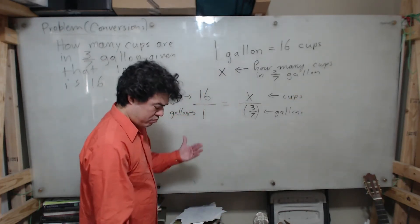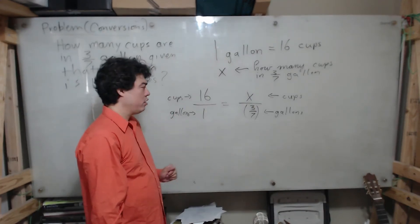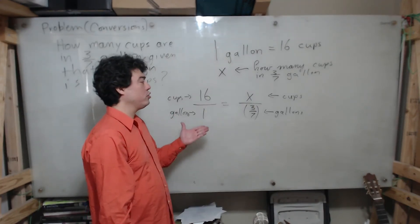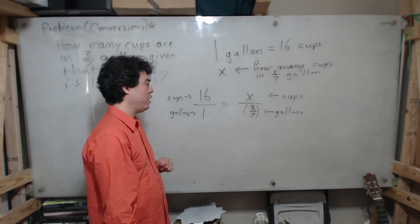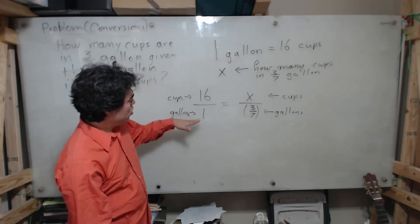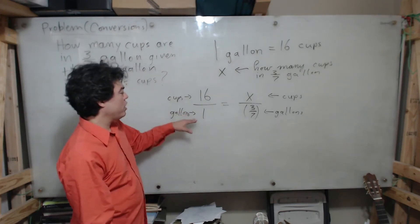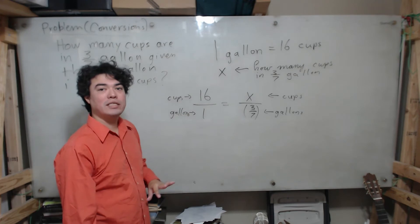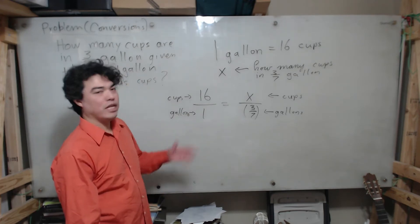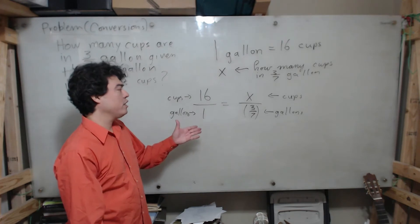Okay, so now I have set up my proportion that we're going to solve to get the number of cups in three-sevenths of a gallon. And think about why this proportion makes sense: we assume that units don't change size, so if one gallon has 16 cups, that's going to be the same no matter what. That's basically why this conversion technique works.